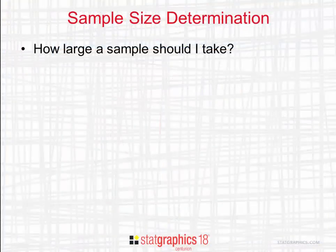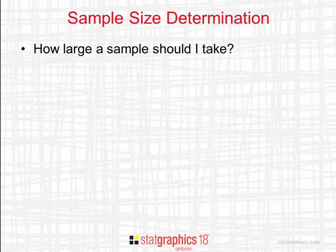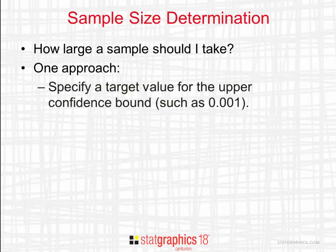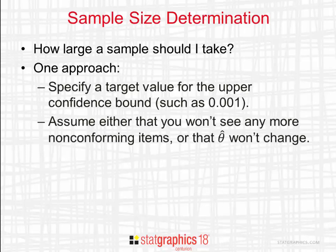Let's talk for a moment about how large a sample I should take. One approach to answering this question is to specify a target value for the upper confidence bound on theta hat. For example, I might say I want to take a large enough sample such that the 95% upper confidence bound is no greater than 1 out of 1,000. You also need to assume either that the number of non-conforming items won't change, that X won't change, or that the estimated proportion of non-conforming items won't change.